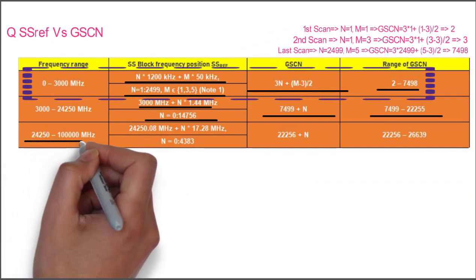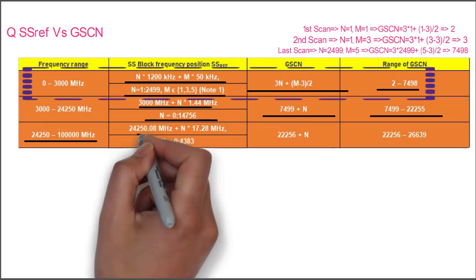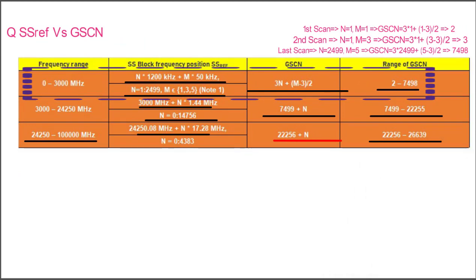For the frequency range above 24250 MHz, the formula is SS_ref = 24250.08 MHz + N × 17.28 MHz, where the synchronization raster step size is 17.28 MHz. The N value belongs to 0 to 4383, and the GSCN formula is 22256 + N, giving a GSCN range of 22256 to 26639.